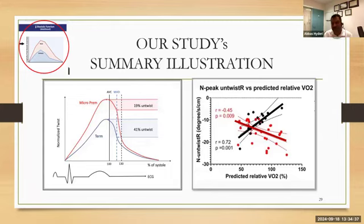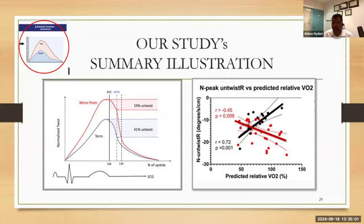Our study can be summarized: on the left-hand side, the red graph (micro-prems) twisted higher and untwisted slower. The twist was only 19% before the mitral valve opened — an abnormal isovolumic pressure decline or DP/DT. Comparing to terms, who twisted less and relaxed better — the micro-prems were much different from terms in both systole and diastole. The poor relaxation matches the diastolic dysfunction graphs from Adam Lewandowski's myocardial fibrosis paper. On the right-hand side, exercise capacity is inversely related — preterms have poor exercise capacity.